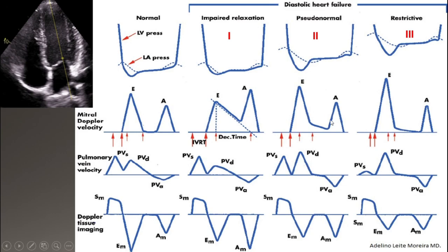With further progression of diastolic dysfunction, left atrial pressure goes higher, resulting in a taller and narrower E wave. The deceleration time decreases and E velocity increases. At one point, E velocity becomes two times A or even more. The same pattern of changes also occurs in the pulmonary vein on Doppler.